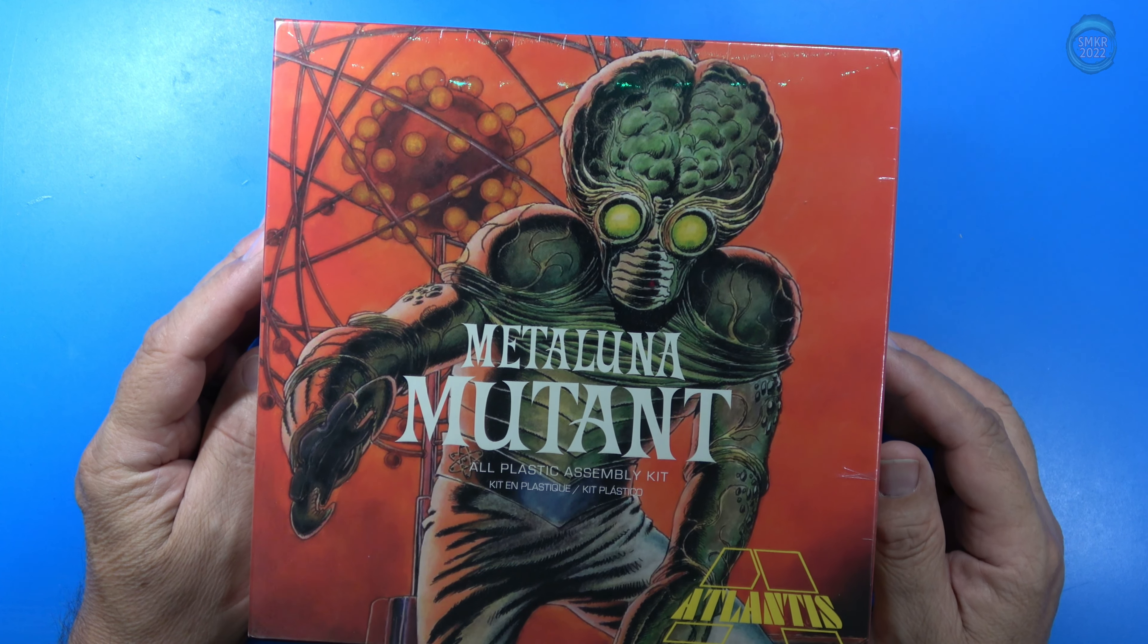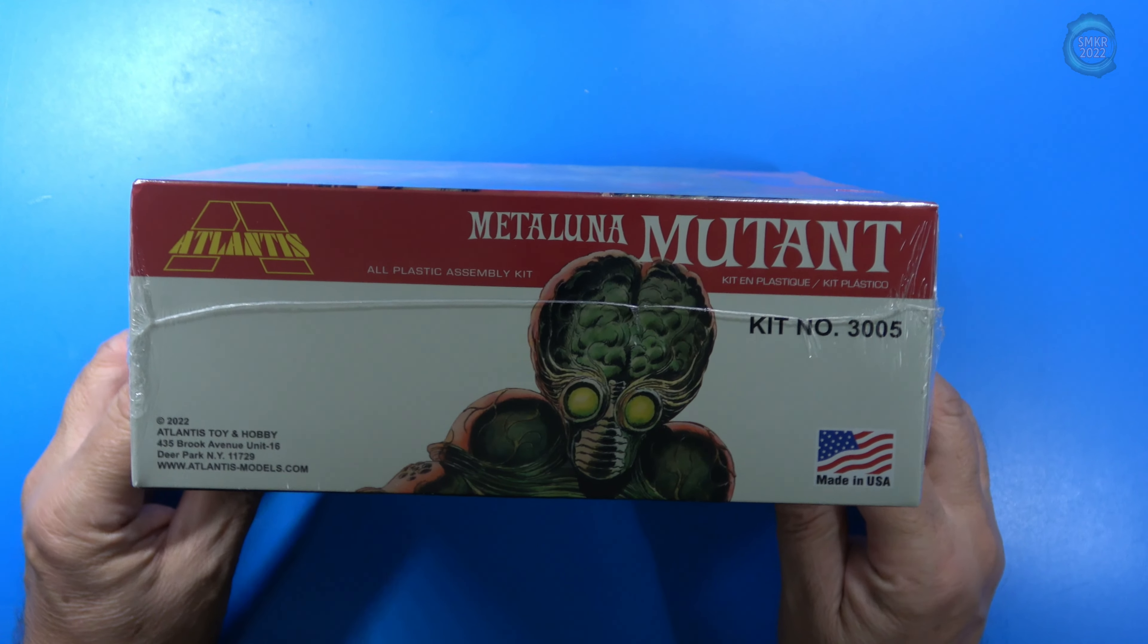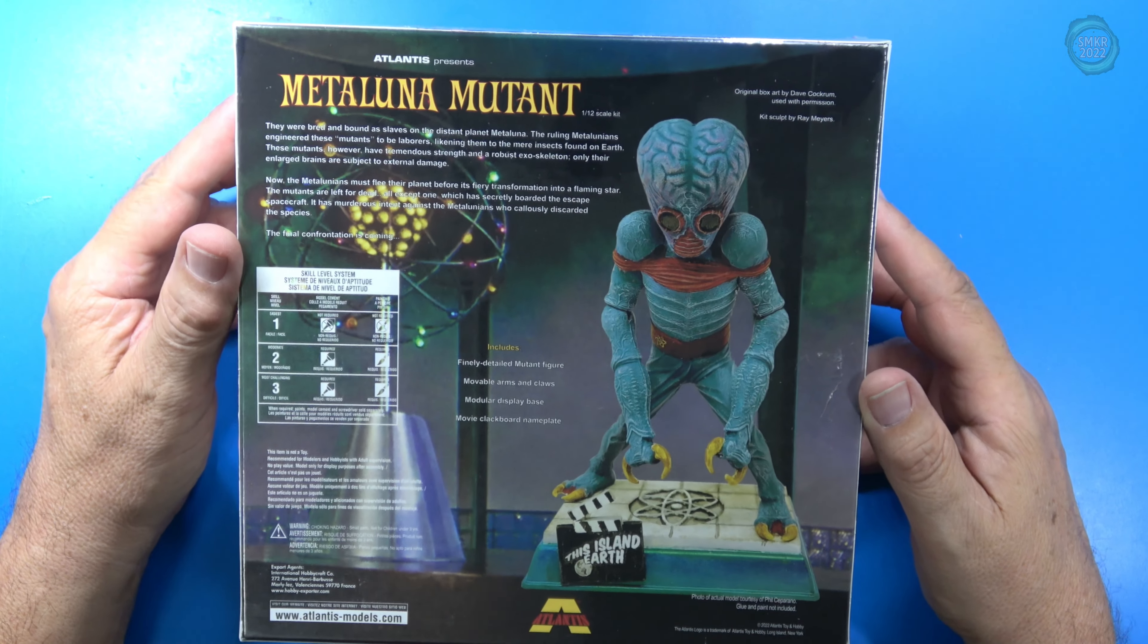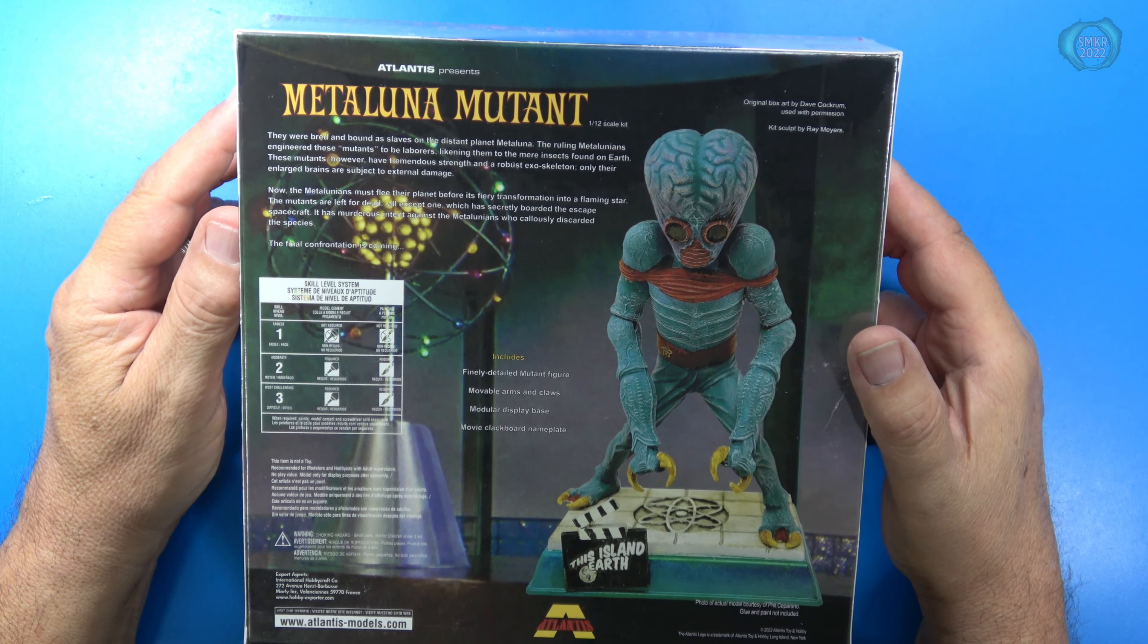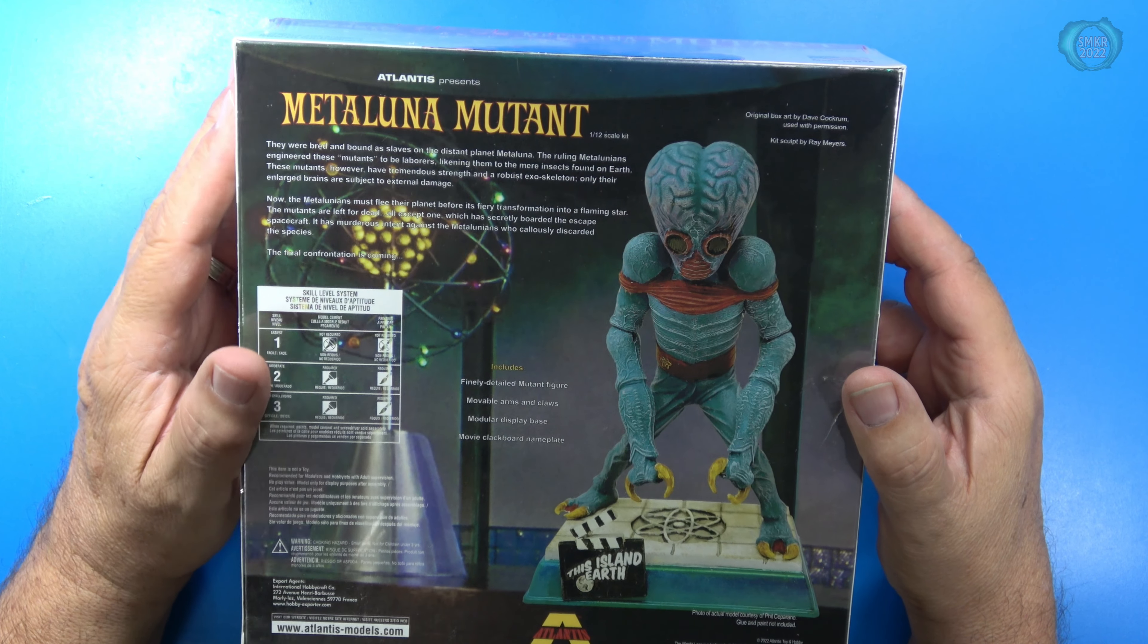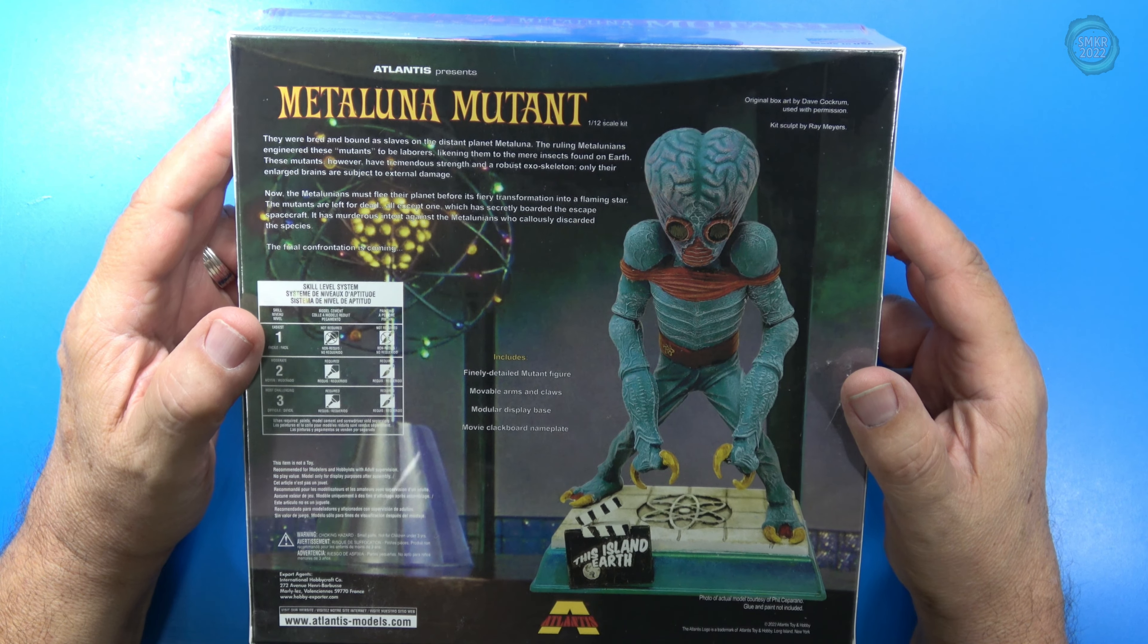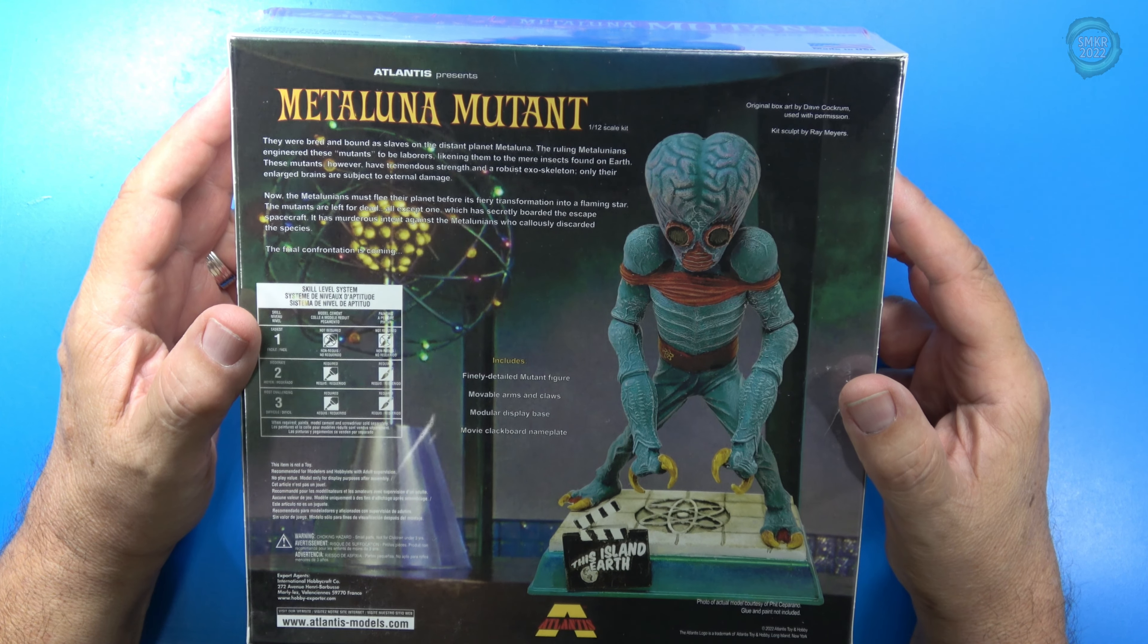And this is an all-plastic assembly kit. This would be kit number 3005. Very cool there. And then on the back side here, they give us full details about the kit. This is fantastic. This kit was sculpted by Ray Myers with the original box art by Dave Cockerum.